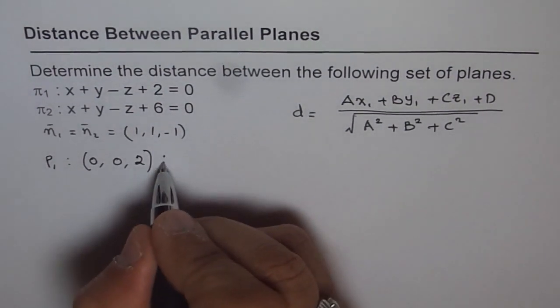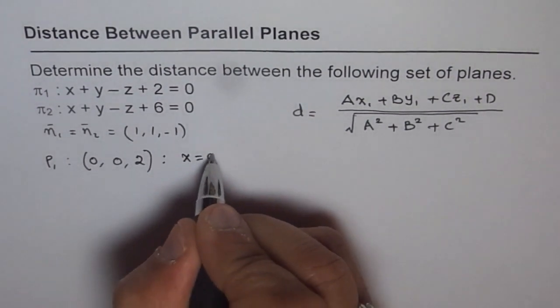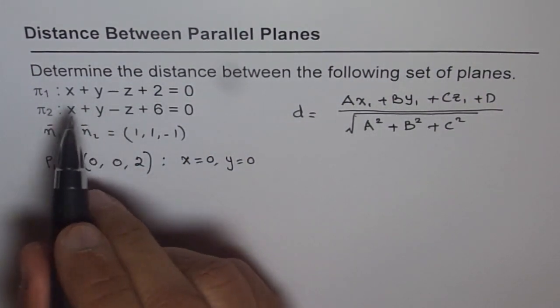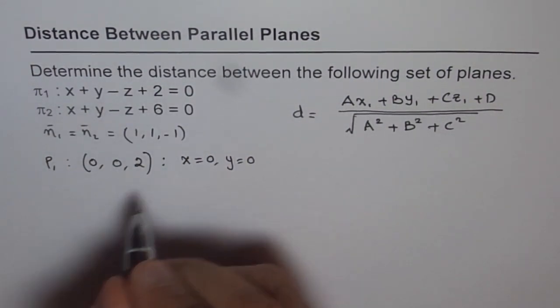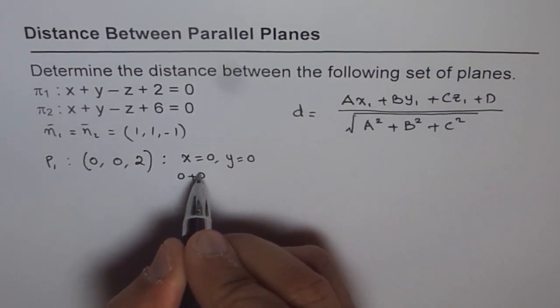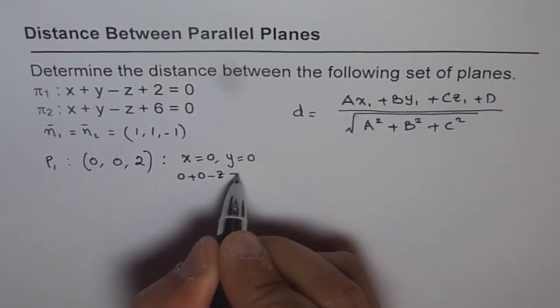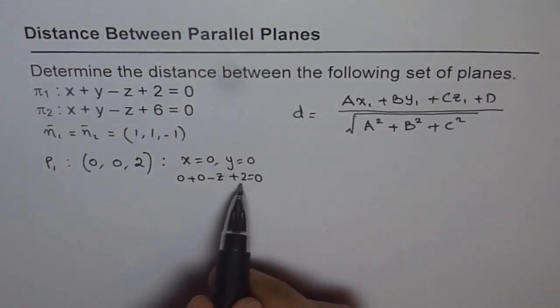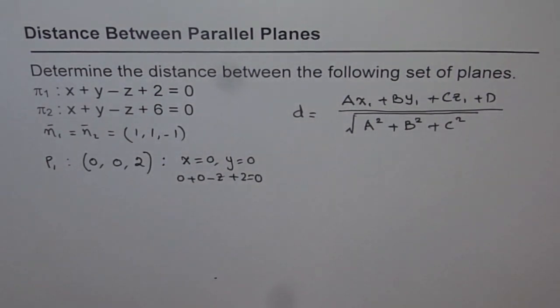That is a point on plane 1. How did we get it? We got it by substituting x equals to 0 and y equals to 0. When we did that, we got 0 plus 0 minus z plus 2 equals to 0, and by solving, we get z equals to 2.